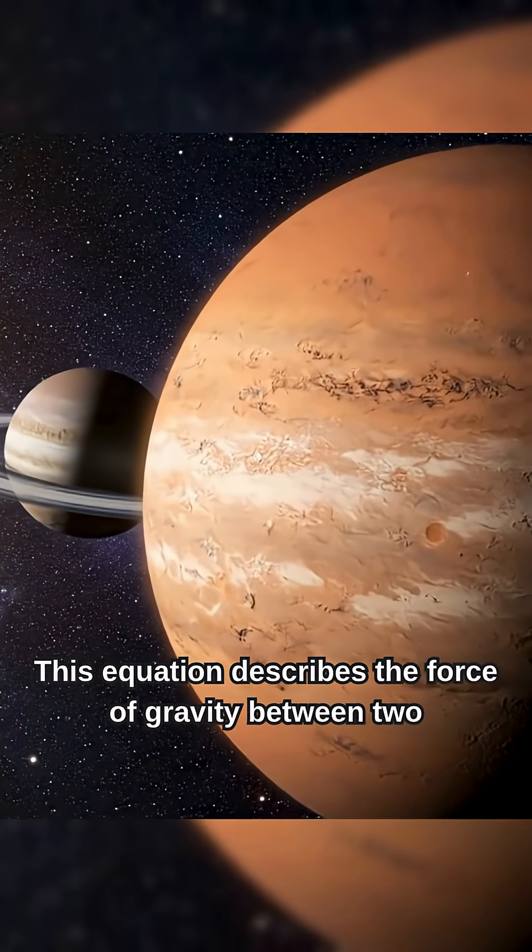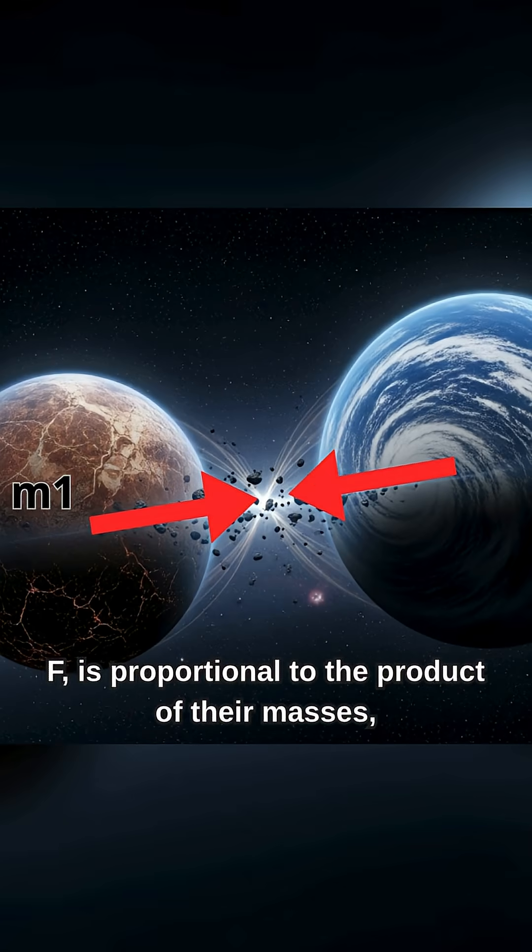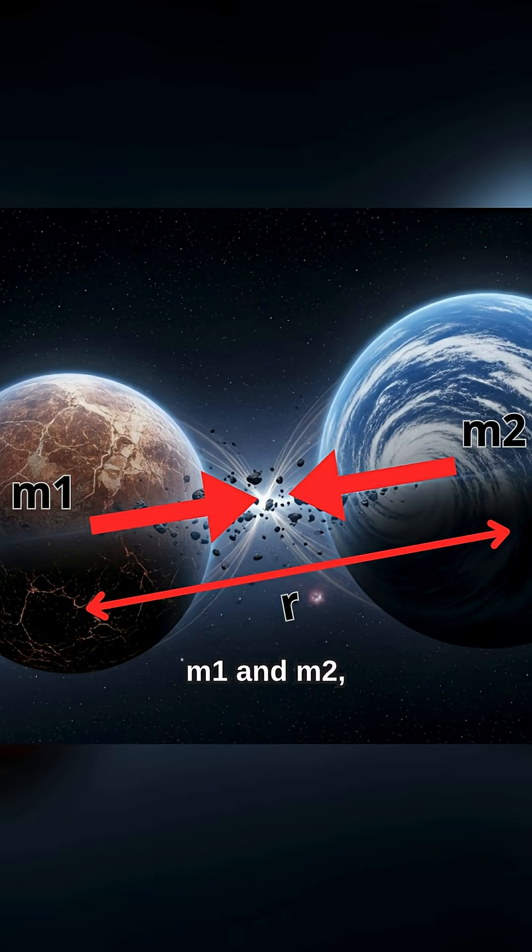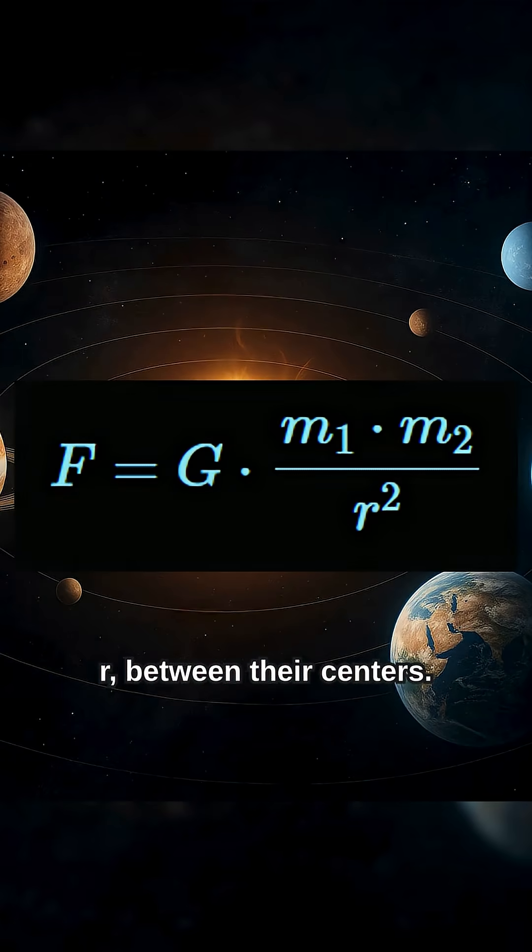This equation describes the force of gravity between two objects. It tells us that this force, F, is proportional to the product of their masses, M1 and M2, and inversely proportional to the square of the distance, R, between their centers.